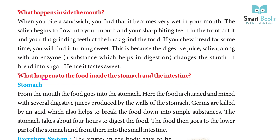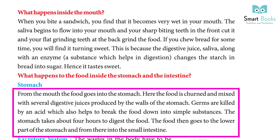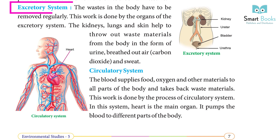What happens to the food inside the stomach? From the mouth, the food goes into the stomach, where it is churned and mixed with several digestive juices produced by the walls of the stomach. Germs are killed by an acid which also helps break the food down into simple substances. The stomach takes about four hours to digest the food, then it passes into the small intestine.